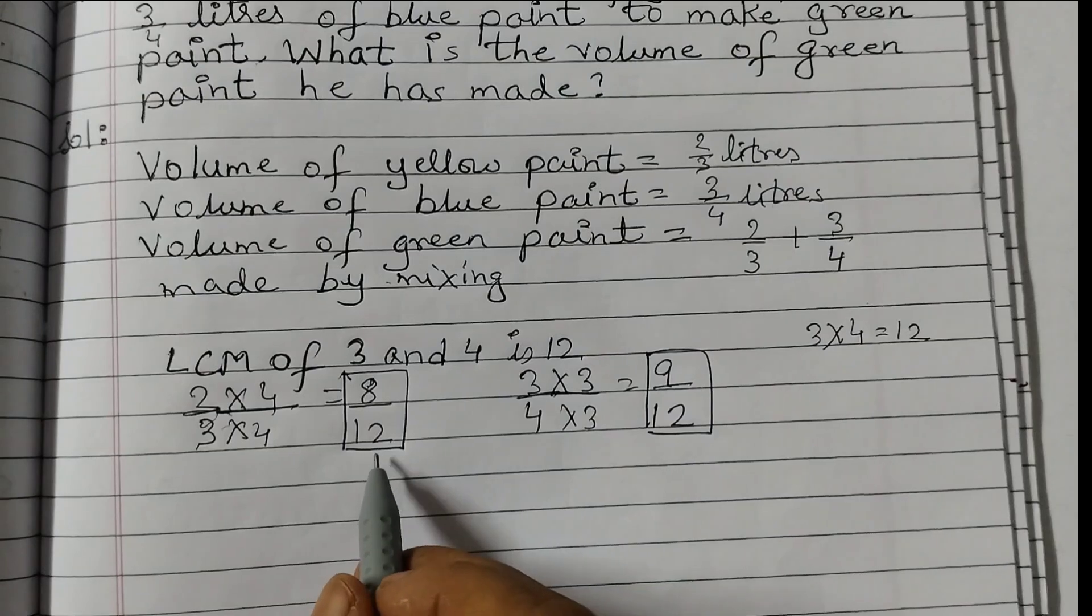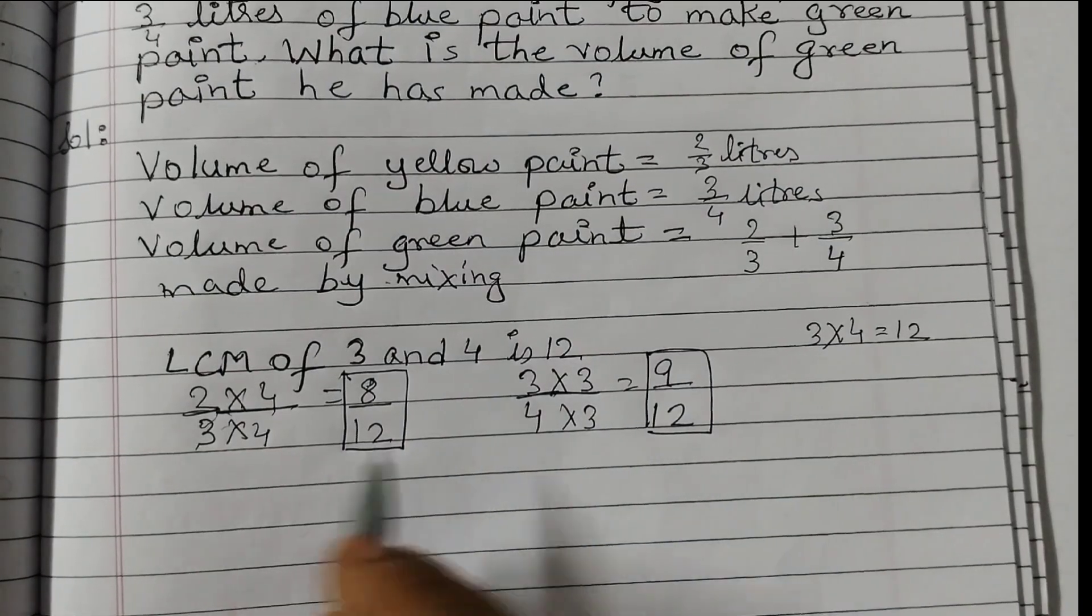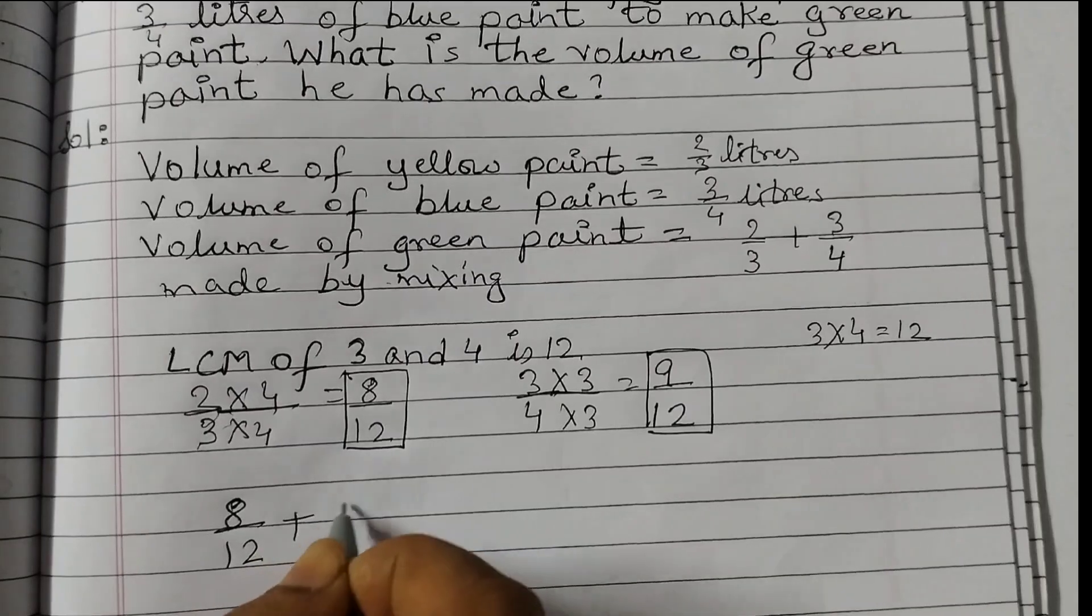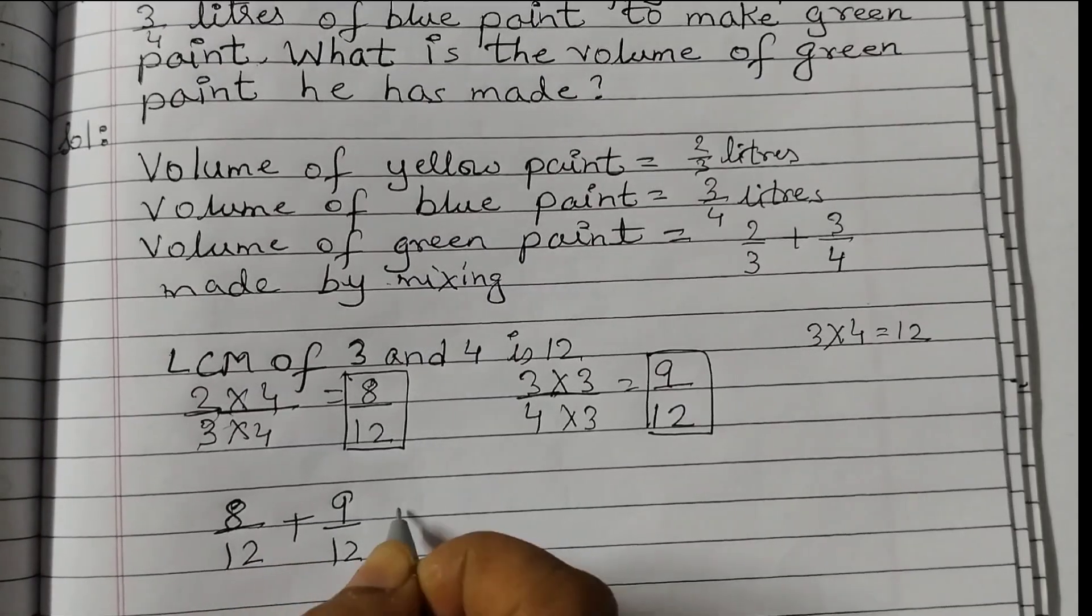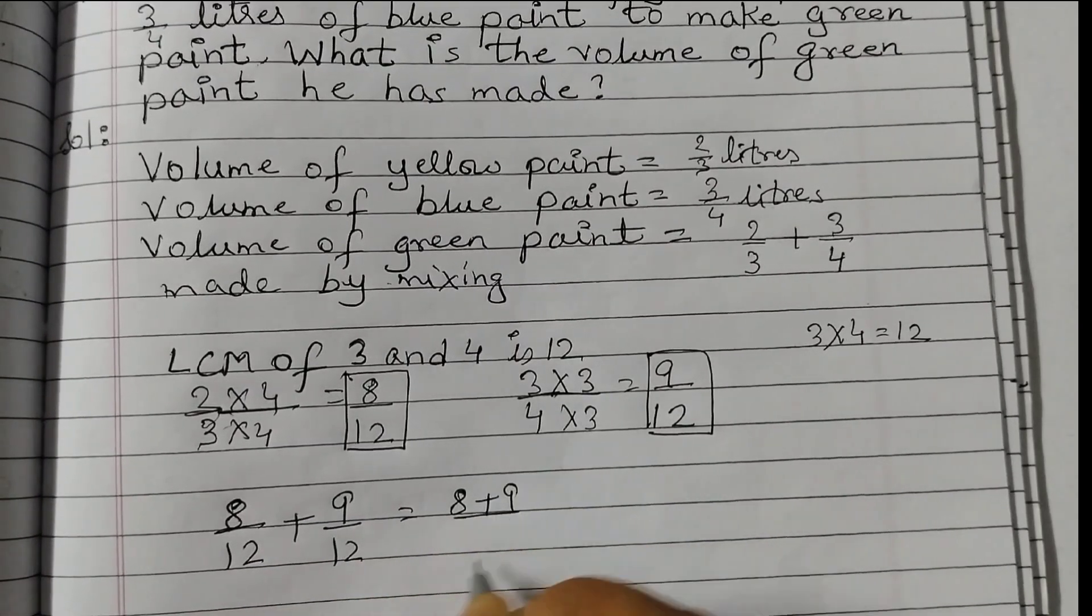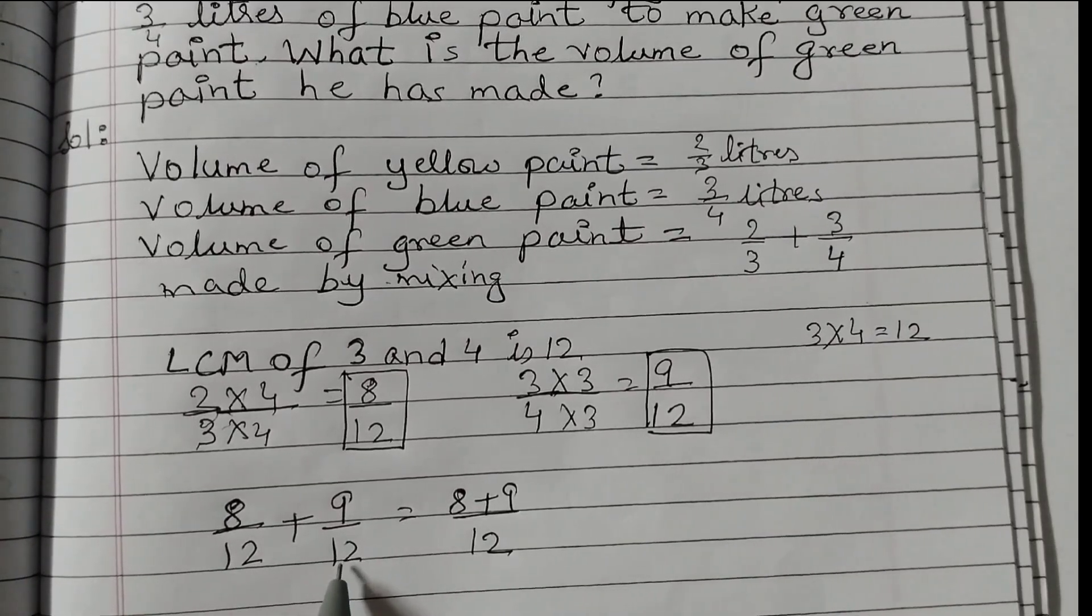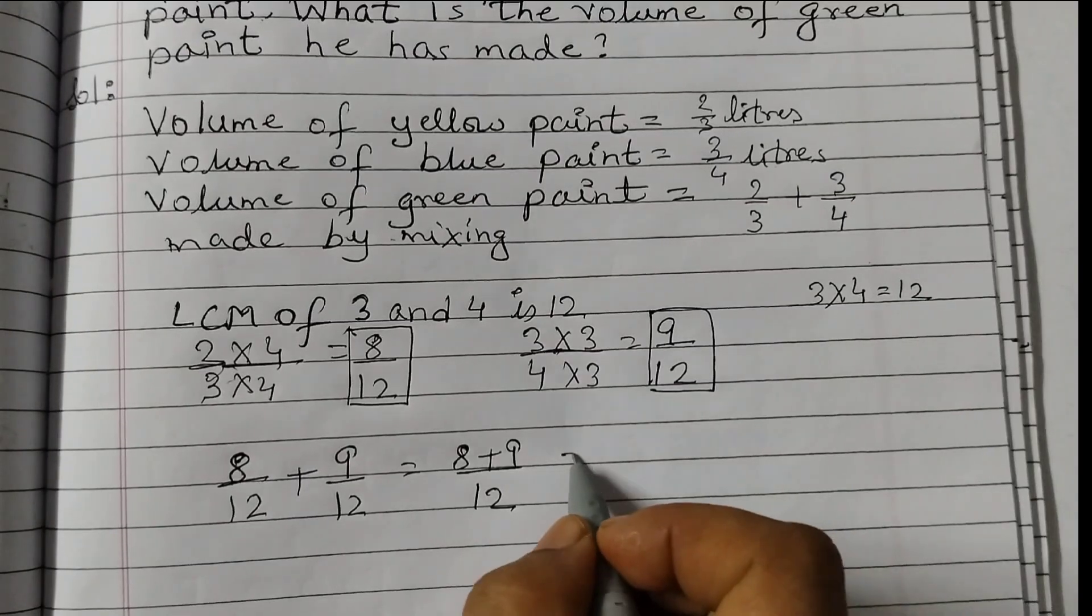We can now add these two fractions: 8/12 + 9/12 = (8+9)/12. The denominator remains the same; we just add the numerators. So 8 + 9 = 17, giving us 17/12 liters.